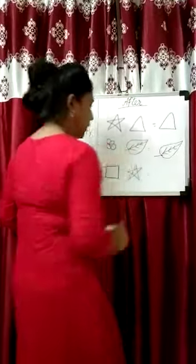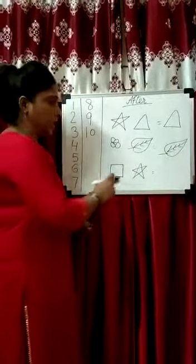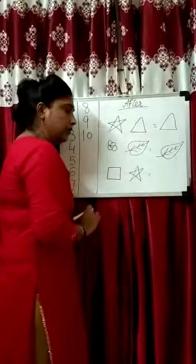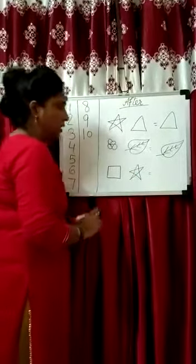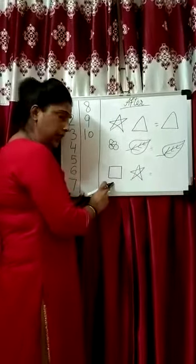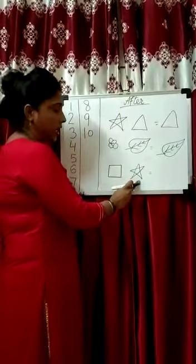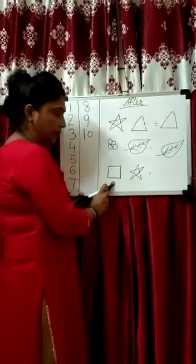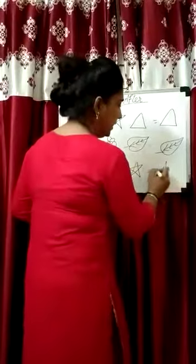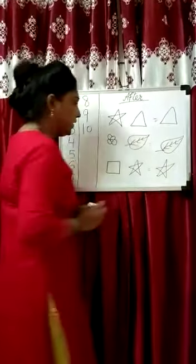Next is square and star. Star is after square. So the answer is star.